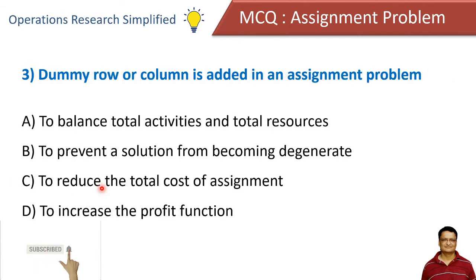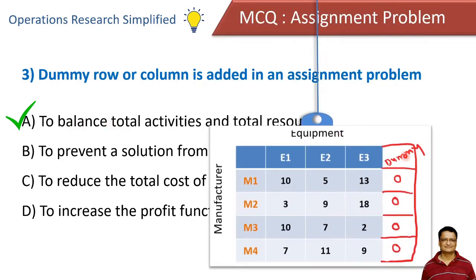A dummy row or column is added in an assignment problem. The options are: to balance total activities and total resources, to prevent a solution from becoming degenerate, to reduce the total cost of assignment, or to increase the profit function. The correct answer is to balance total activities and total resources. For example, if there are four rows and three columns, we add one dummy column with zero as the assignment cost to balance the problem.